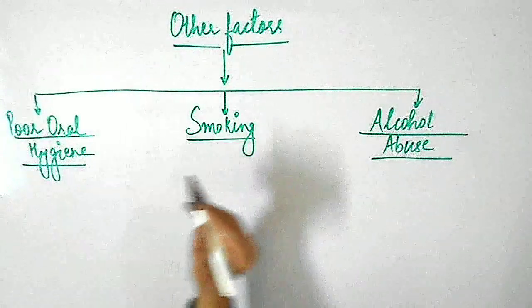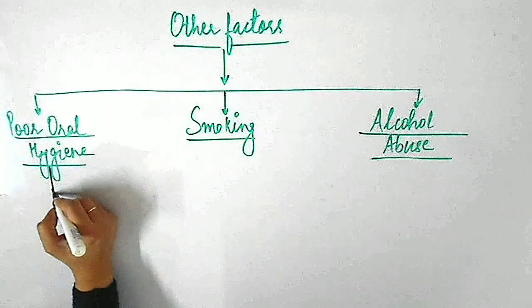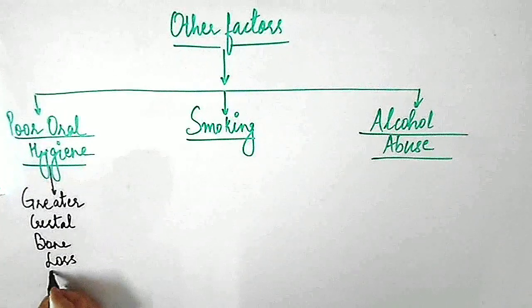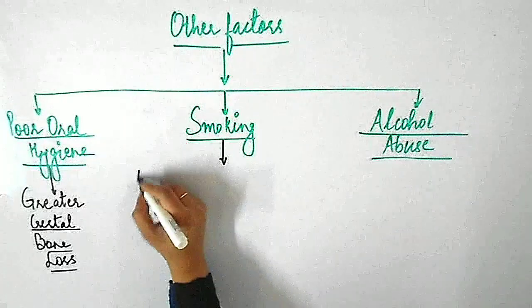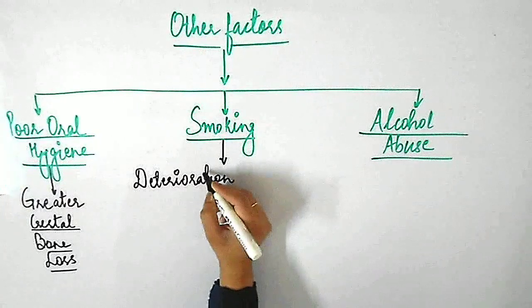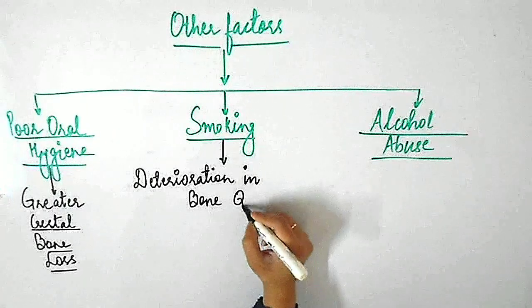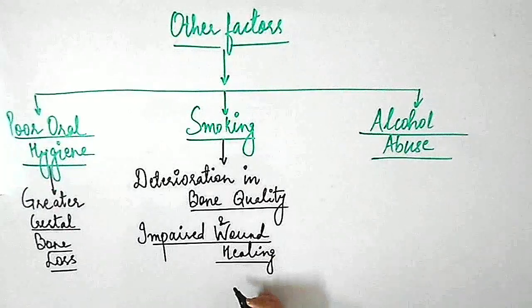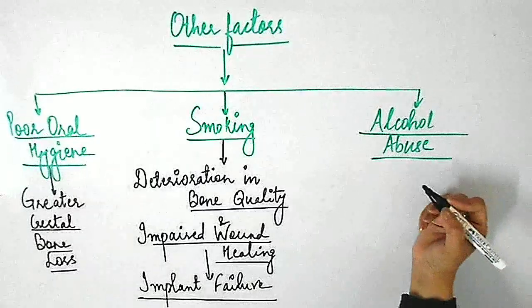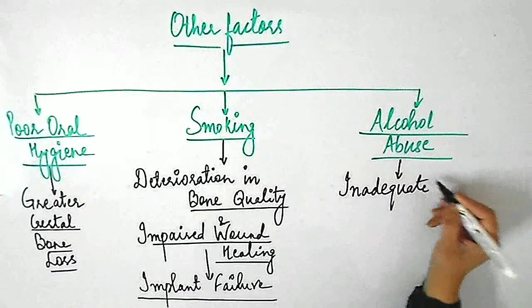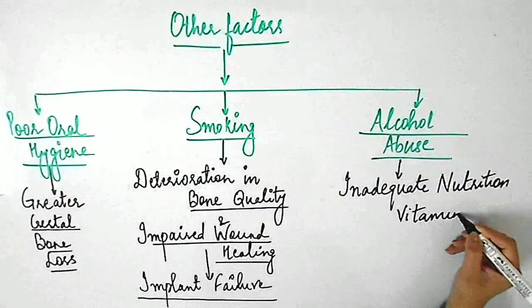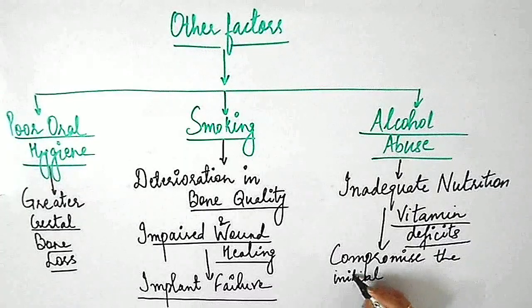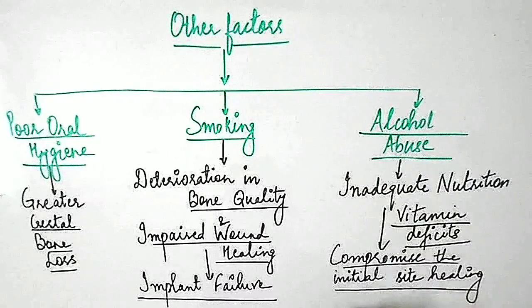Other factors responsible for crestal bone loss include poor oral hygiene, smoking, and alcohol abuse. Patients with poor oral hygiene or existing periodontal disease experience greater crestal bone loss than patients with good oral hygiene and stable periodontal status. Smoking is associated with deterioration in bone quality and impaired wound healing, ultimately resulting in implant failure. Individuals with excessive alcohol intake may have inadequate nutrition including vitamin deficits, which may compromise initial site healing after implant placement.